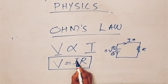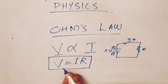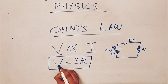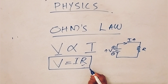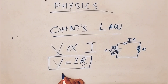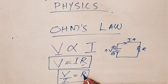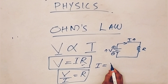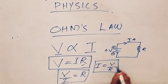I is called current. R is called resistance. V equal to IR. V equal to IR.